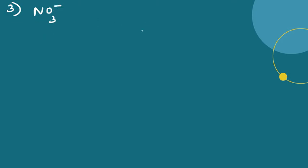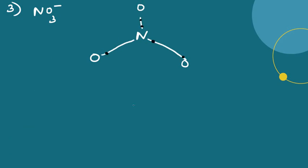Let us take the example of the nitrate ion, NO3 minus. Nitrogen is the central atom with three oxygen atoms at terminal positions. For each terminal oxygen, we count the electrons: 1, 2, 3, 4, 5, 6, 7, 8 — octet is complete. We do this for each of the three oxygen atoms, and in each case the octet is complete at the terminal positions.